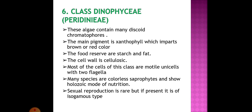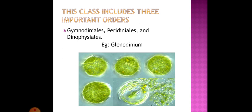Moving on to the sixth class: Dinophyceae, also known as Pyrrophyta. These algae contain many discoid chromatophores. The main pigment is xanthophyll which imparts brown or red color. Food is reserved as starch and fat. The cell wall is made up of cellulose. Most cells are motile unicells with two flagella. Many species are colorless saprophytes and show holozoic mode of nutrition instead of autotrophic nutrition. Sexual reproduction is rare but if present it is of isogamous type. This class includes three important orders: Gymnodiniales, Peridiniales, and Dinophysiales. Example: Gymnodinium. A picture of Gymnodinium is shown.